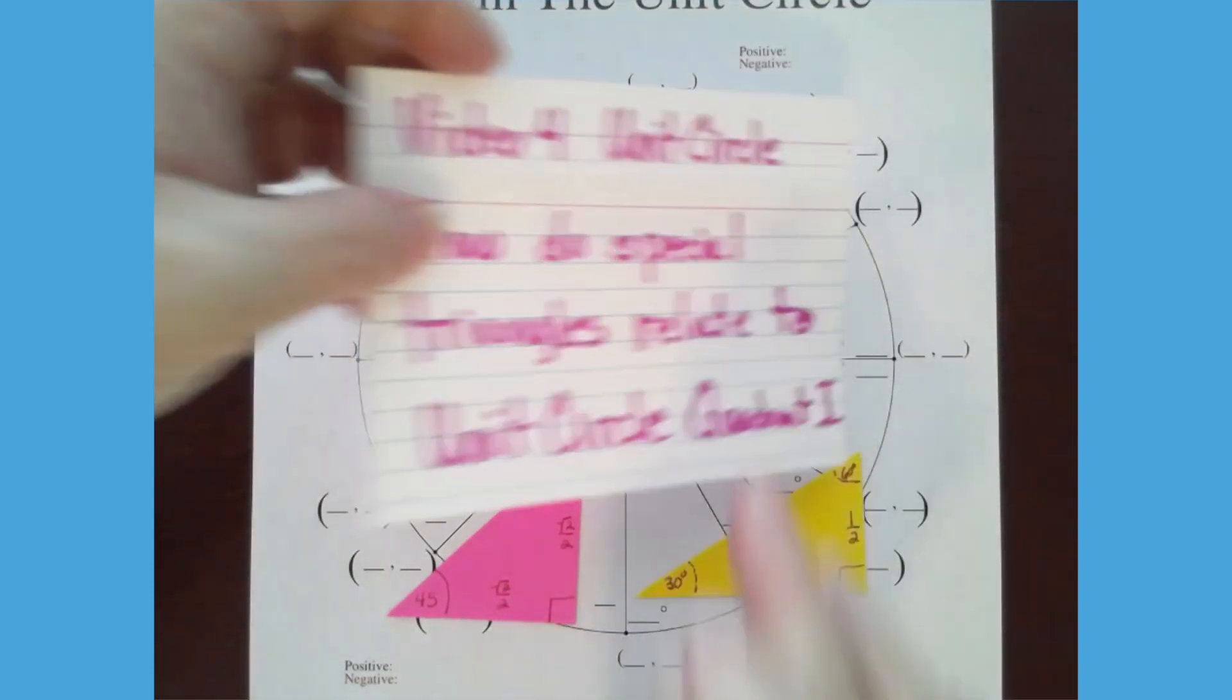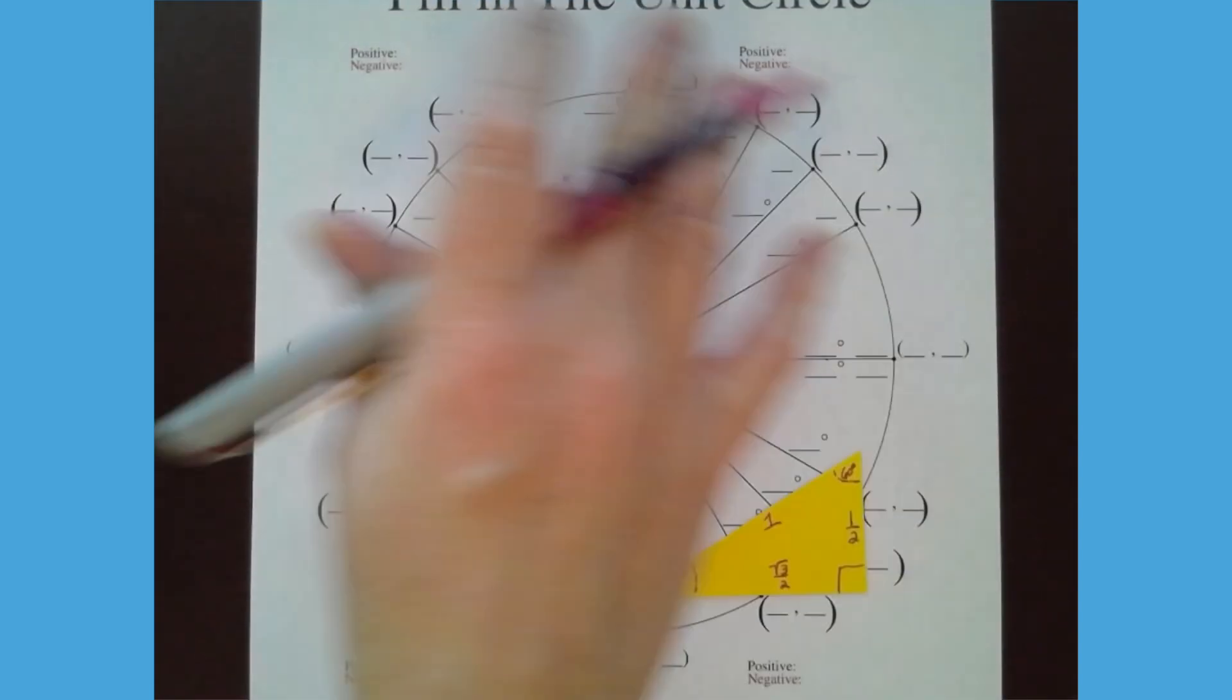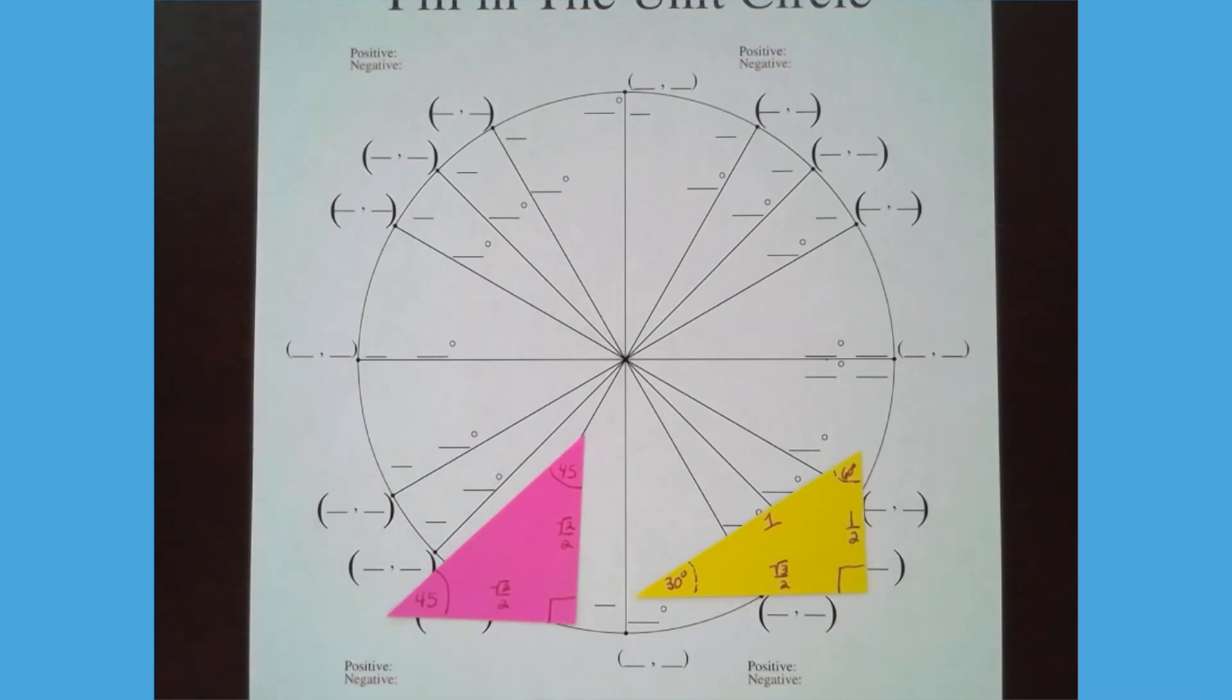When you look at this big circle, there's lots of things on here. But today we're just going to talk about the first quadrant and kind of get you familiar with that. And then in the next video, we'll talk about how we can take the first quadrant and look at the rest of the circle. So just a step at a time for us.